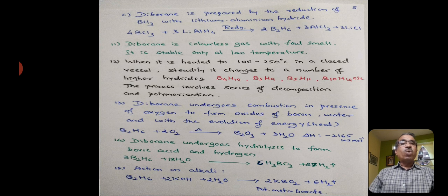Diborane is a colorless gas with a false smell. It is stable only at low temperatures. When it is heated to 100 to 250 degrees centigrade in a closed vessel, steadily it changes to a number of higher hydrides like B4H10, B5H9, B5H11, B10H14, etc. The process involves a series of decomposition and polymerization.